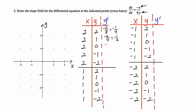Then we have negative 2 over 0, which is undefined; negative 2 over negative 4, which is positive 1 half; and negative 2 over negative 8, which is 1 fourth. For speed's sake, I'm going to do all the calculations first and then go back and actually draw the slope field when I'm done.